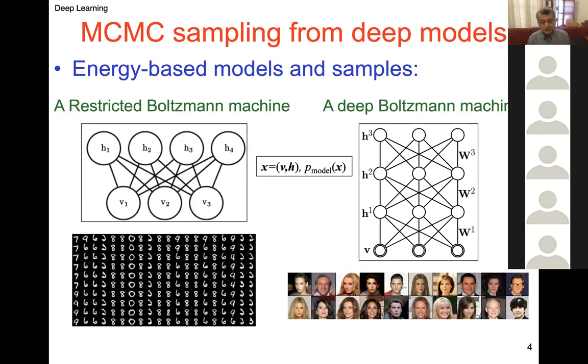The end goal is to generate samples like these, presumably using Gibbs sampling — it can generate an infinite number of samples because it knows what these digits look like. It moves between different digits, generating all of them rather than being stuck in one.